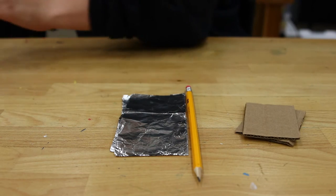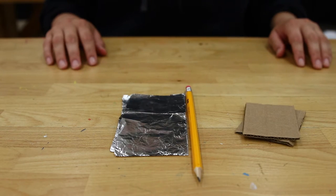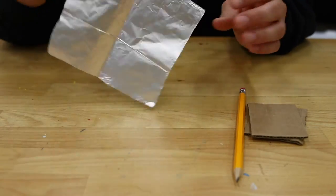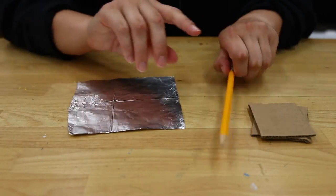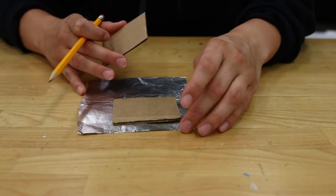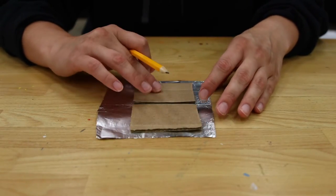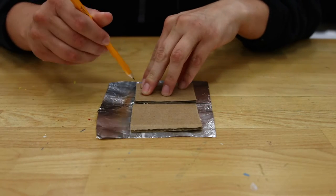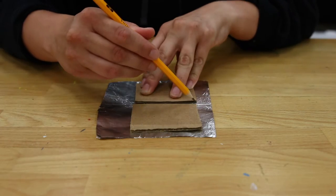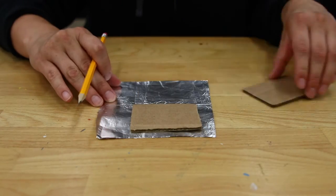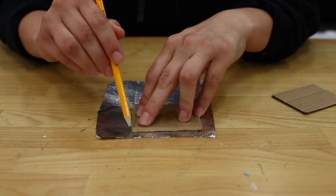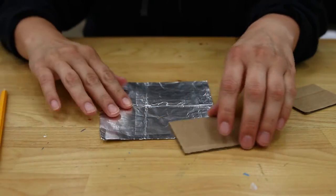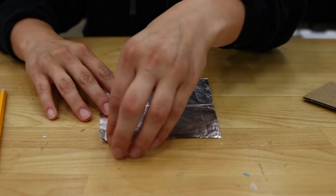We're going to start with the cardboard, aluminum foil and a pencil. Lay your aluminum foil flat and place the cardboard pieces on top. Use your pencil to trace all the way around each piece. If you can't see the lines too clearly, try using a pen or marker for this step.